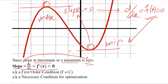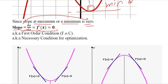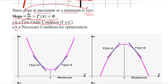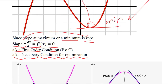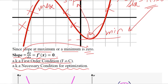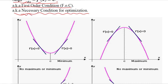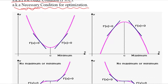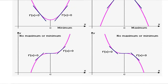The slope equals the derivative, so the derivative equals zero. This gives us the first order condition. We have developed it and will give it a name: the necessary condition for optimization. Without being at either the maximum or minimum point, we cannot be in an optimization situation. So the necessary condition — that the first order derivative equals zero — is established.